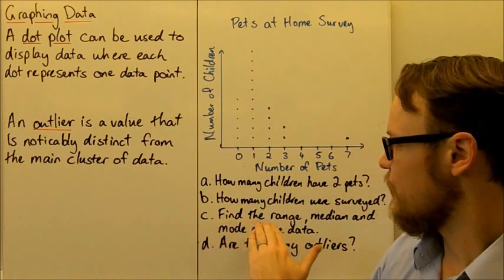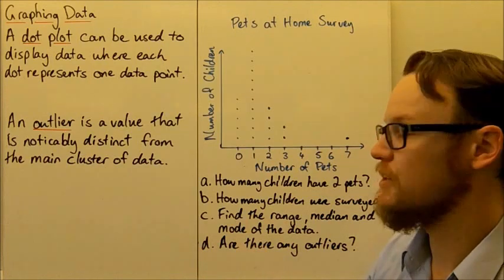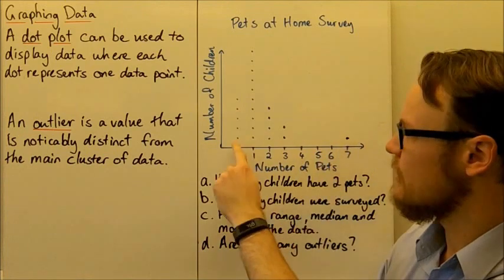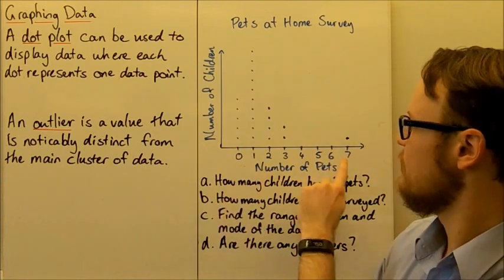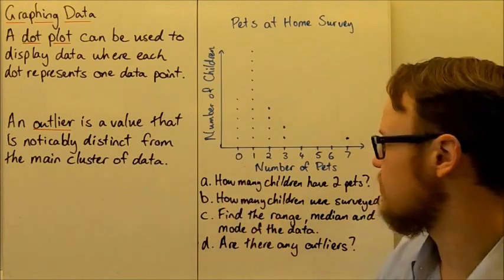We're also asked to find the range, median, and mode of the data. So the range is going to be the difference between the lowest and highest values. So our highest value is seven, and our lowest value is zero. So seven was the highest number of pets minus zero, so the range is seven.